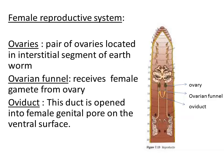We now understand how male and female gametes are formed. However, even though earthworm is hermaphrodite, the gametes produced within the same animal do not undergo fusion. Instead, the male gametes received from another worm fuse with the female gametes, resulting in the formation of young ones. Let us now understand the process of reproduction.